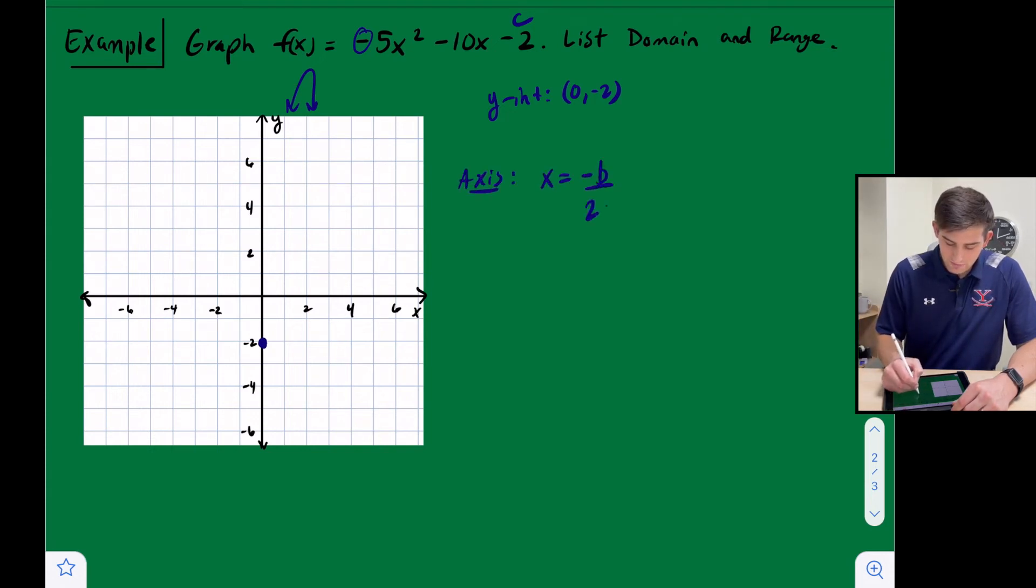And let's find our axis of symmetry. So let's say x equals opposite of b over 2a. So a is negative 5, b is negative 10. So this is going to give us opposite of b would be positive 10, 2 times negative 5. So this is going to be x equals 10 over negative 10. And we get x equals negative 1.